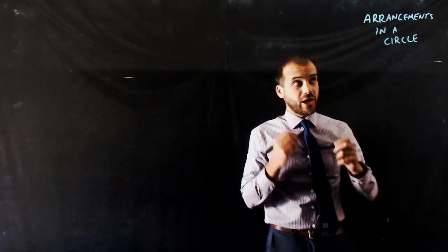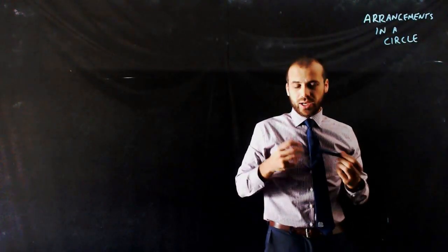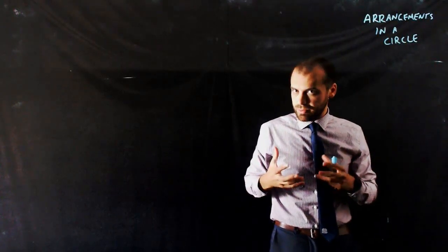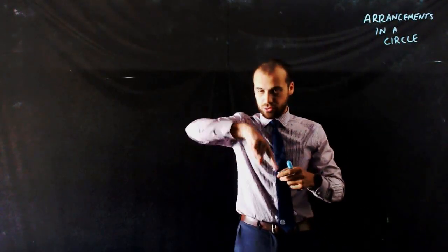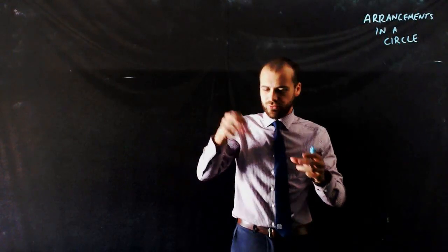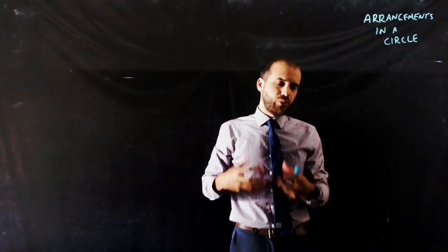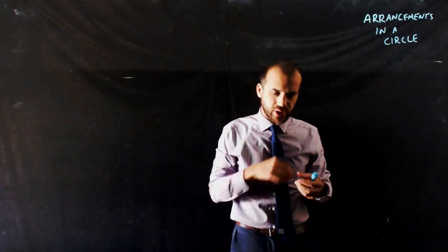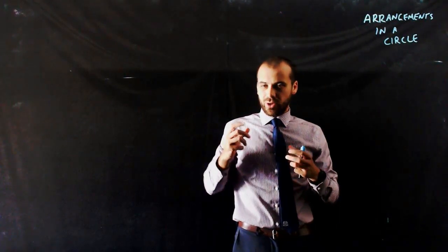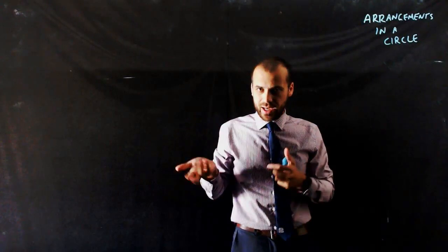A quick video here to talk about arrangements in a circle. Let's say you've got seven people and a table that's round, and you're going to put four people at that table. How many different ways can you arrange those people, so that you know who they're sitting next to?